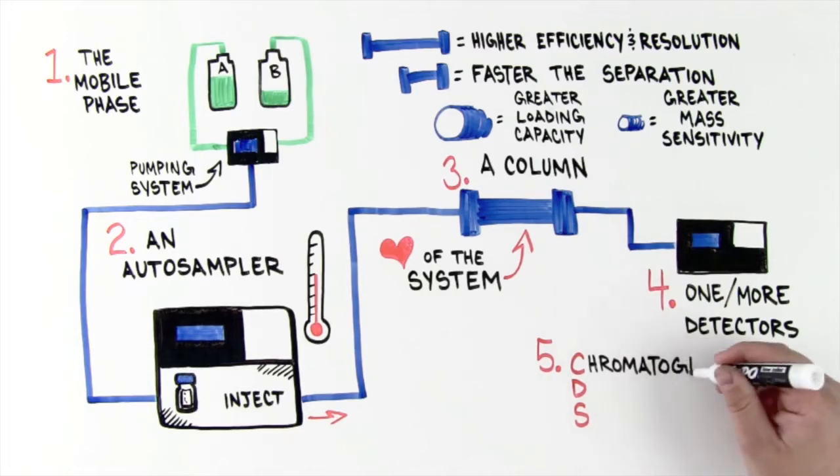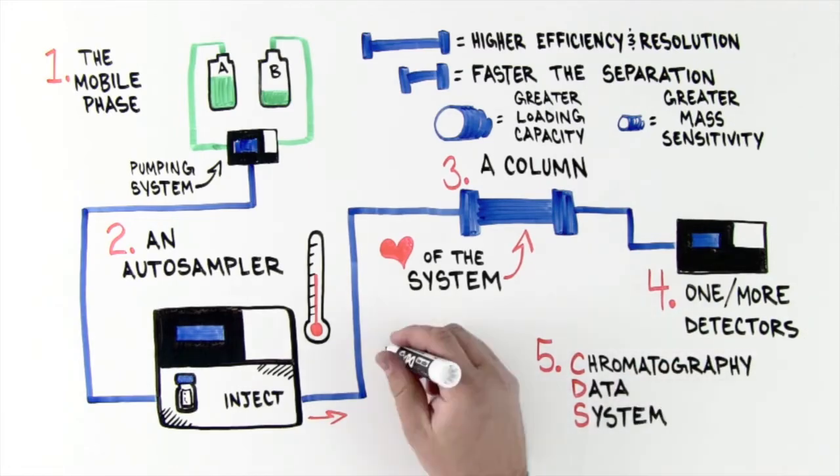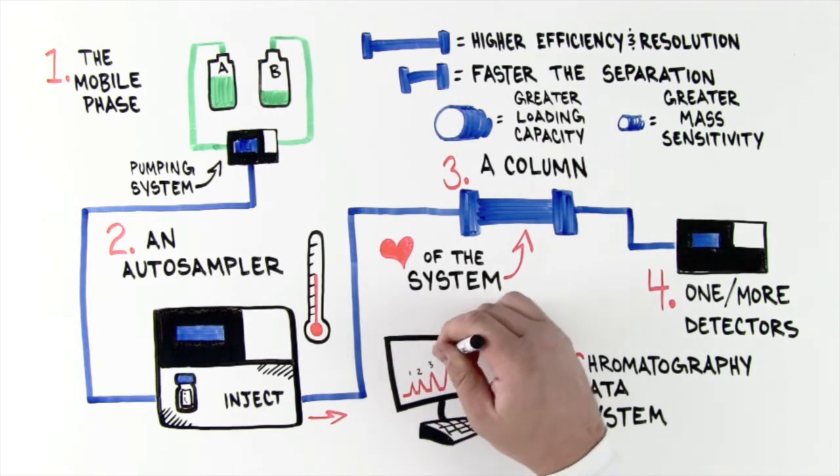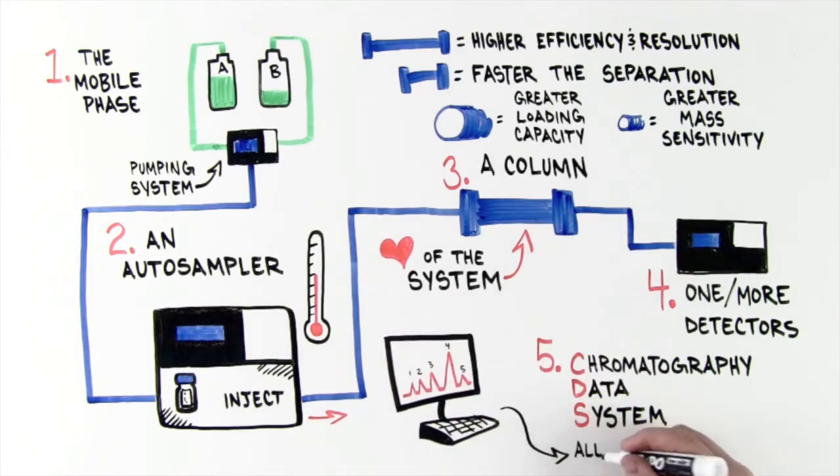And 5. A chromatography data system, CDS. The data system translates the signal from the detector into a chromatographic spectrum that provides qualitative and quantitative data about the sample. The data system allows complete control of the pump, autosampler, and detector. All of the instrument parameters, automated run sequences, and data collection can be controlled by the data system.